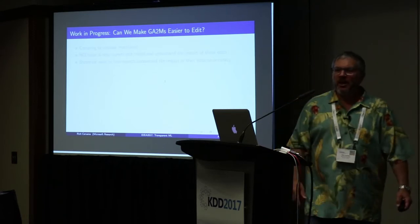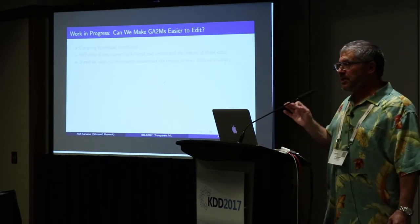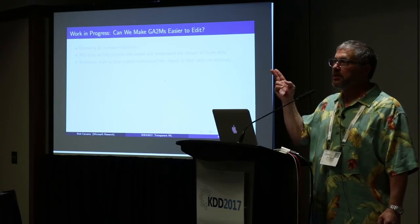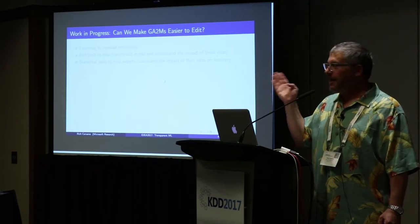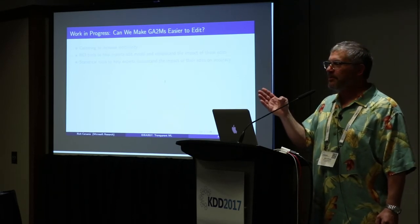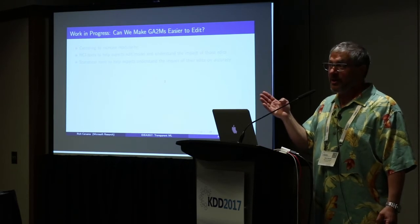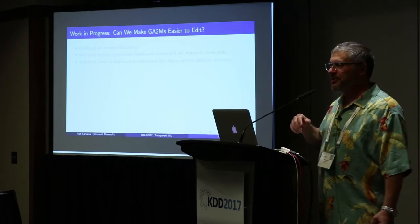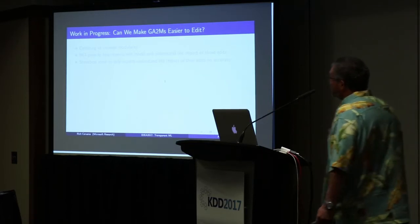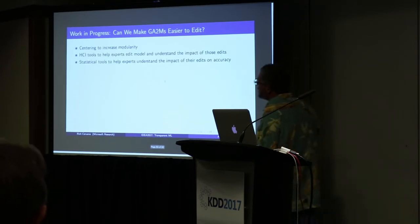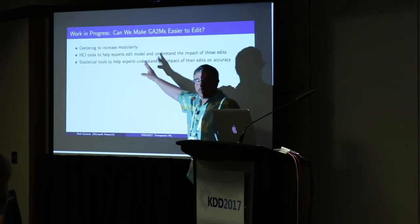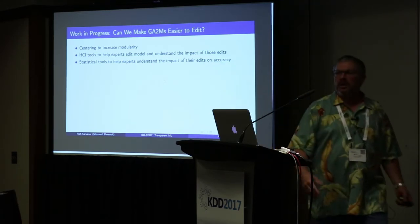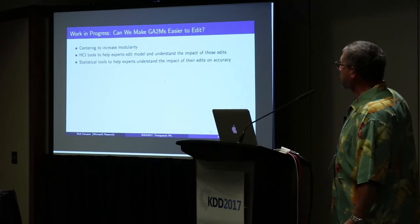Let me talk about making the models more editable — which is different than making them more interpretable. Remember in the case of a model that thinks asthma is good for you, heart disease and chest pain are good for you, and being 105 is good for you — we have to edit all those things before we deploy the model. Otherwise, the worst thing you could be is a 105-year-old asthmatic heart disease patient — the model would say you're fine. So we have to be able to edit the models. One of the things we can do is centering — we've been doing that for a long time — and we've been doing it already in all the graphs you've seen.